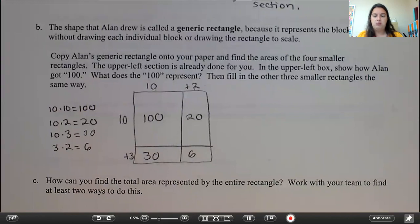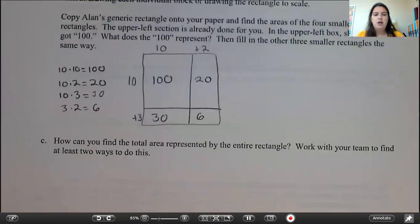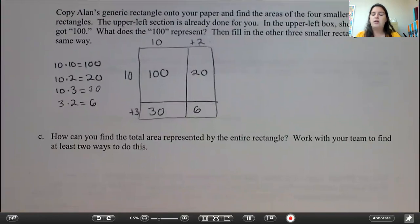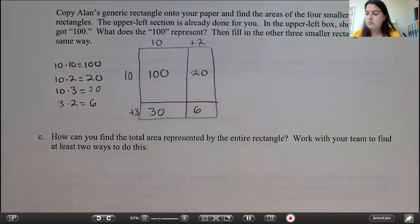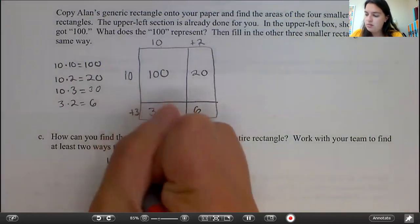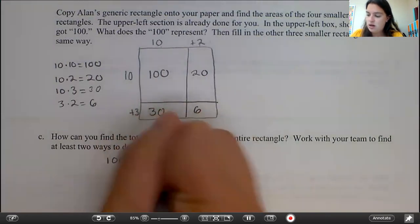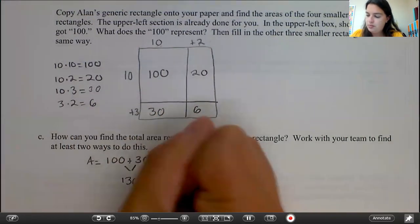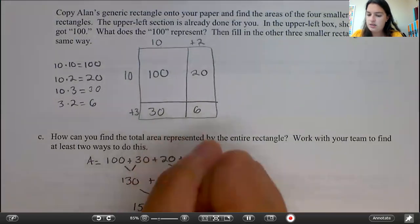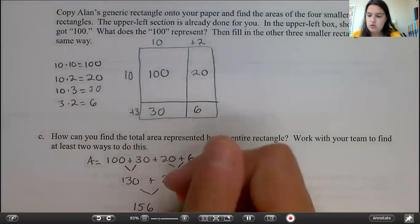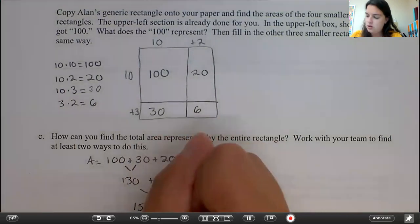So now our generic rectangle is completely filled in. Hmm, that's a lot easier than what we were doing earlier. So let's look at C: how can you find the total area represented by the entire rectangle? Work with your team to find at least two ways to do this. So we have the area of each of those individual squares, but what can we do to find the total area? Well, let's think. We could add all these individual areas up. Okay, so we have 100 plus 30 plus 20 plus 6, so 100 plus 30 and this is area, is 130 plus 20 plus 6 is 26, so 130 plus 1 plus 26 is going to give us 156, and we don't know what we're measuring here, so we are going to say units squared because we're unsure.